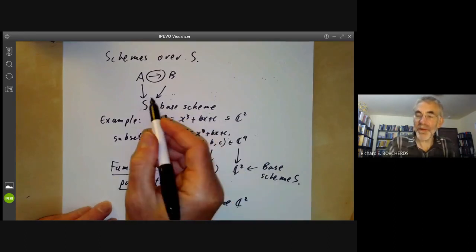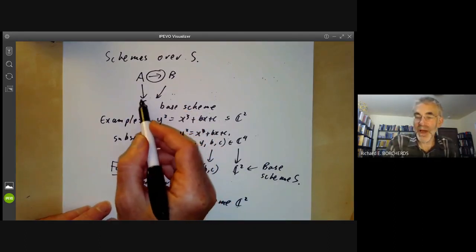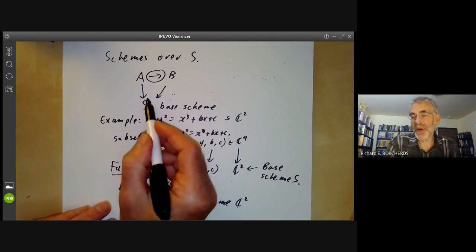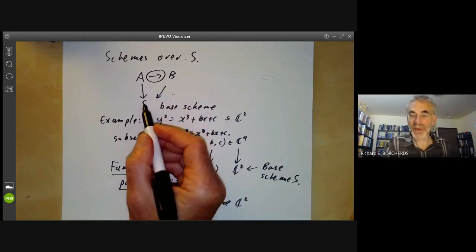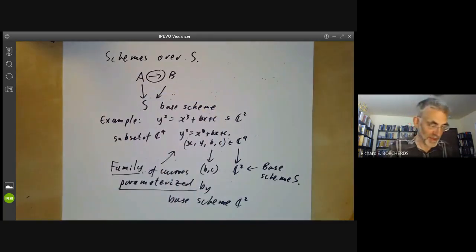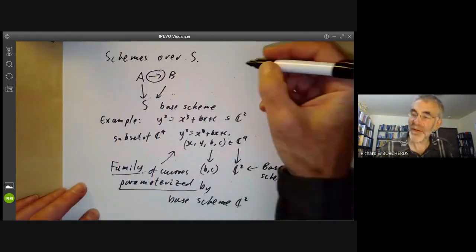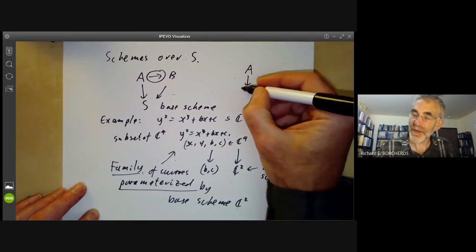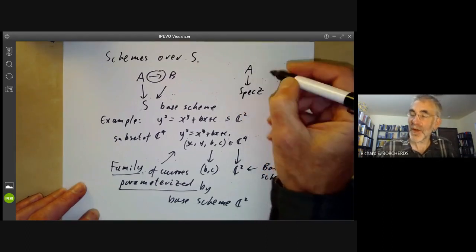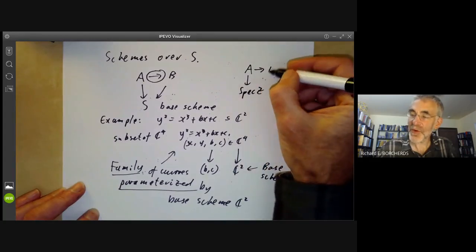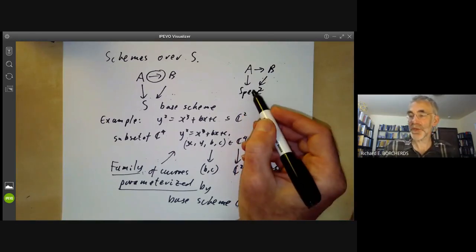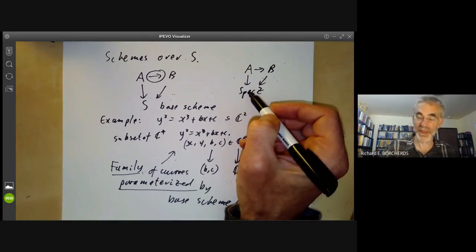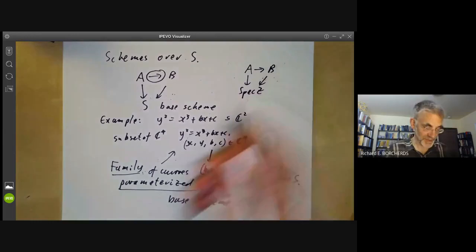In general, if you've got a scheme over a scheme S, you can think of this informally as a collection of schemes parameterised by S, because you can take the fibres of points over S. You don't actually lose anything by considering schemes over S, because any scheme has a unique map to the spectrum of Z. So talking about schemes is exactly the same as talking about schemes over spec Z. In category theory terminology, spec Z is a terminal object — there's a unique morphism from any object to it.